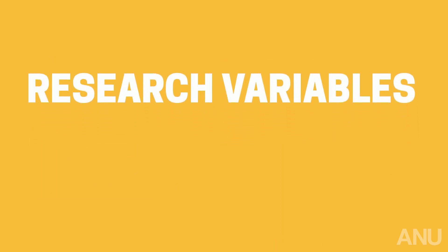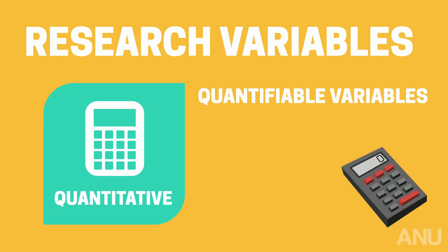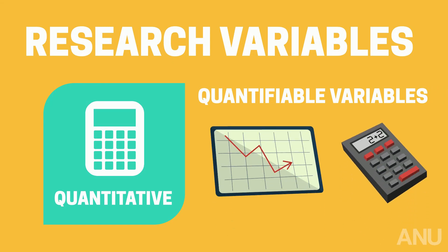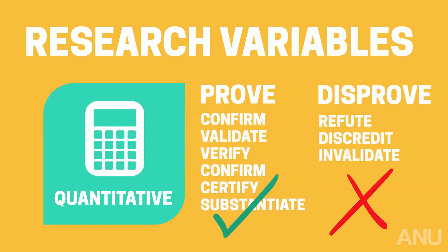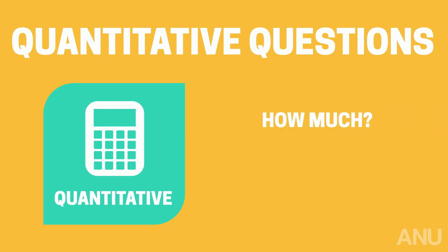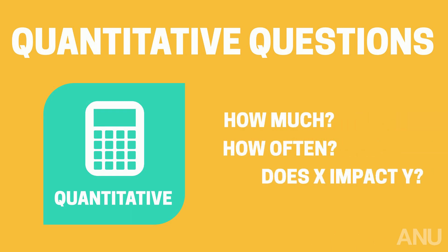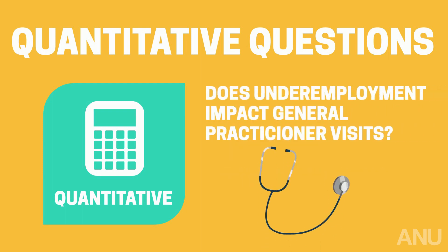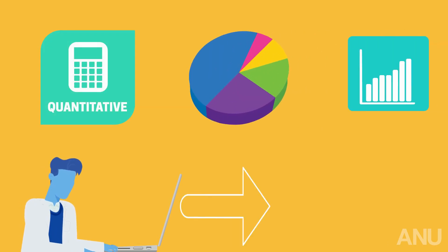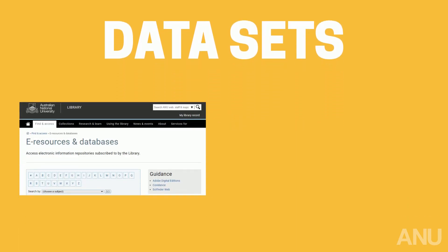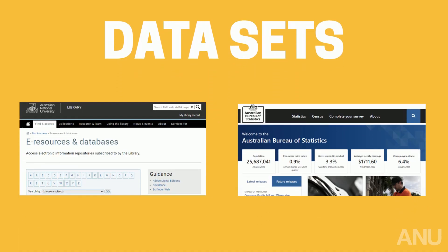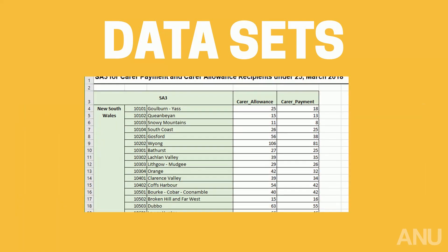Quantitative research looks at quantifiable variables — that's where the numbers part comes in. It seeks to prove or even disprove a clearly stated hypothesis. Quantitative questions ask: how much? How often? Does x impact y? Or more specifically, does underemployment impact general practitioner visits? Quantitative research looks at statistics and numbers to answer these kinds of questions. Think data sets downloaded from the ANU Library, the Australian Bureau of Statistics, or mathematical data collected by the researcher.